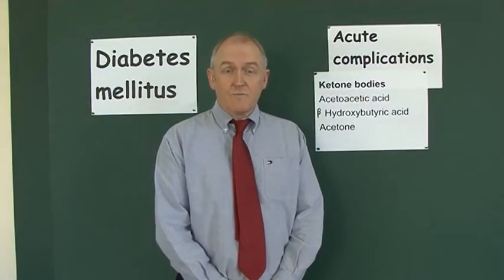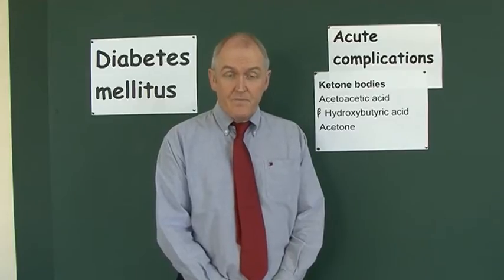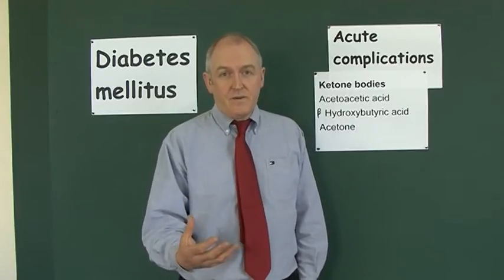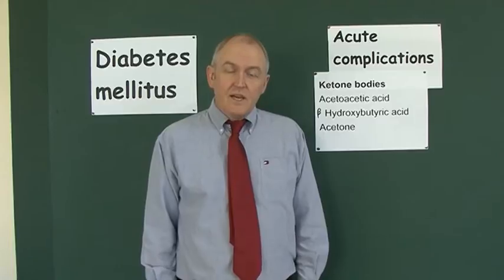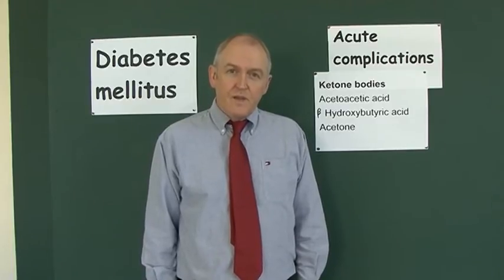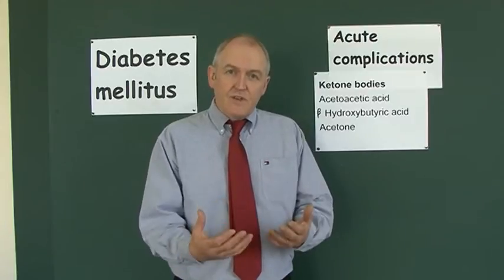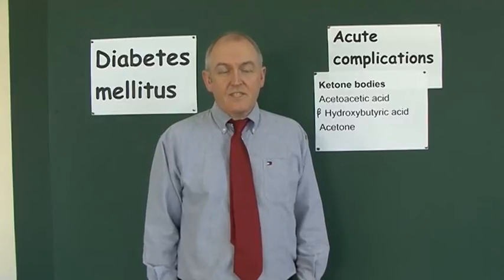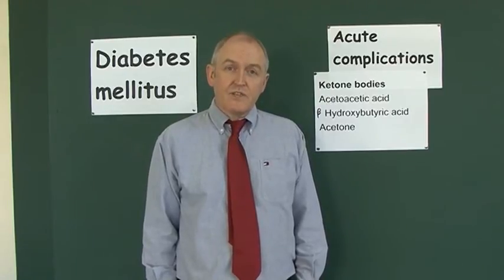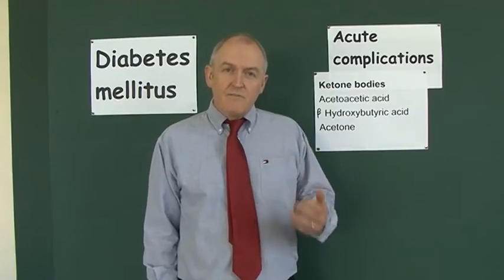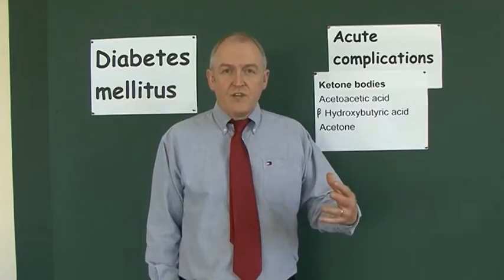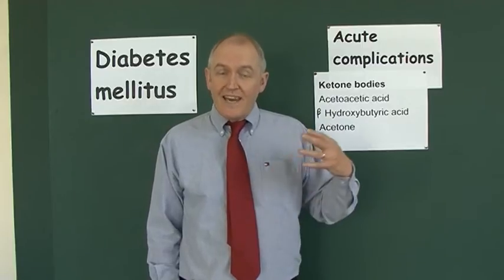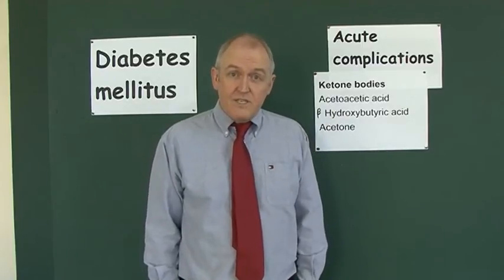Hypoglycemia is typically caused by too much insulin. The next acute complication is caused by not enough insulin. When there's not enough insulin, ketone bodies will be produced when fats are burnt in the absence of carbohydrates. The saying that 'fats can only be burnt in the fire of carbohydrates' is a good physiological saying, because in diabetes there's not enough insulin, so fats are used but glucose cannot be used, and when fats are used but glucose cannot be used, ketone bodies are produced.